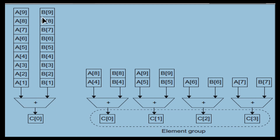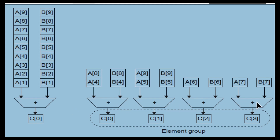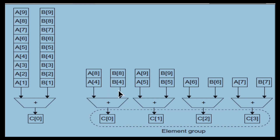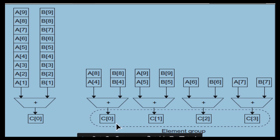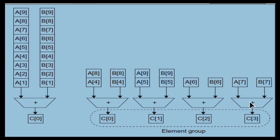With only one ALU it takes 10 clock cycles to add two vectors. Now instead of one ALU, if I use four ALUs: A0 and B0 are assigned to the first ALU, A1 and B1 to the second, A2 and B2 to the third, A3 and B3 to the fourth. In the first clock cycle, A0 B0 are added here, A1 B1 here, A2 B2 here, and A3 B3 here.